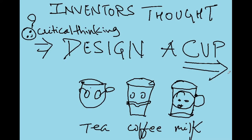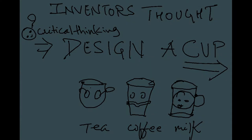Dear viewers, welcome to the Inventor's Thought. Let's start with the critical thinking process with the help of a use case. The task is to design a cup which qualifies as an invention. The objective for this series of videos is to come up with a new product line of cup design. For that, one has to find a problem with the existing design or a set of new problems to solve.